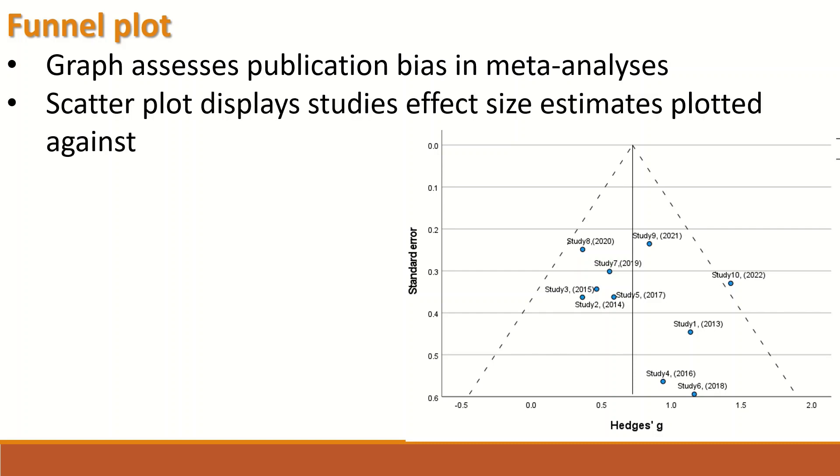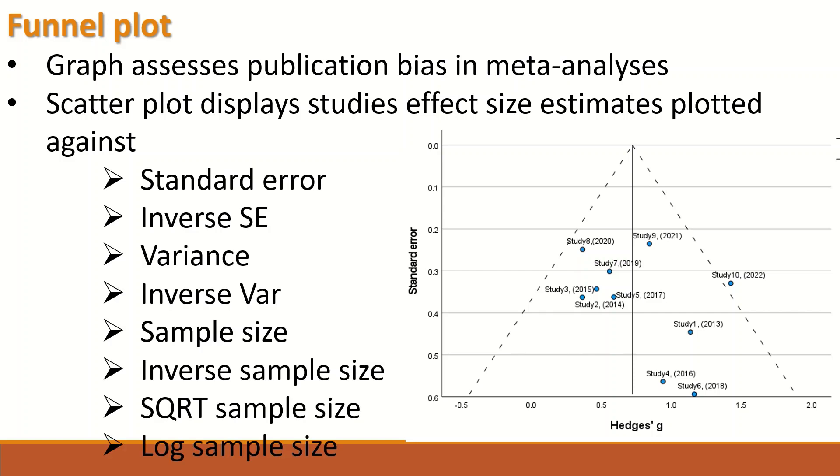The graph will assess publication bias in meta-analysis. It is a scatter plot that displays study size effect estimate plotted against one of these precision measures, which can be a standard error or an inverse standard error or a variance or an inverse variance, sample size, square root of a sample size, and log sample size.